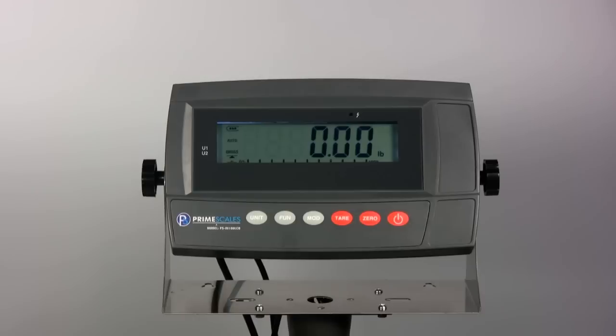Animal Weighing: It is hard to get an animal stable on the scale. This indicator can quickly find a short time stable weight and lock the number. It provides 5 different speeds and 3 different ranges for different kinds of animals.